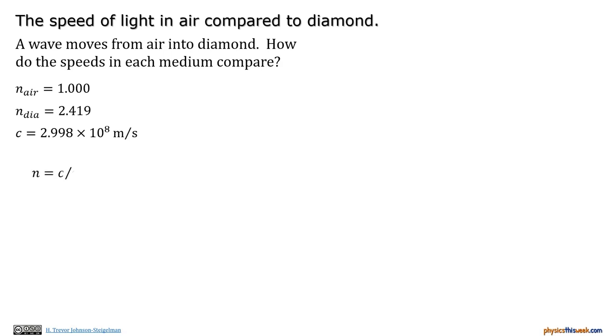Now the base equation we're going to start from here is n equals c over v. But because we want to look at the speeds, we're going to rearrange to get v equals c over n. So we'll look at air versus diamond. For air, we throw in subscripts for air to get v of air equals c over n of air. And then we're going to throw in our numbers. So we get v of air equals 2.998 times 10 to the eighth meters per second divided by 1. Not surprisingly, that gives us back v of air equals 2.998 times 10 to the eighth meters per second.